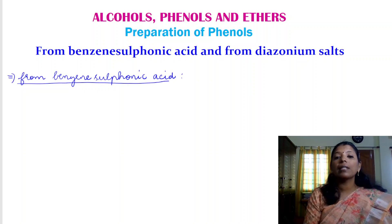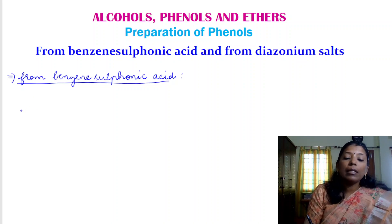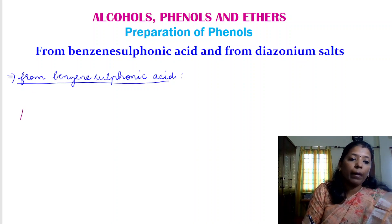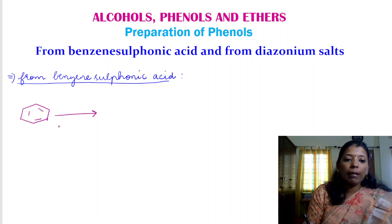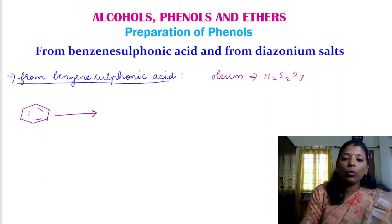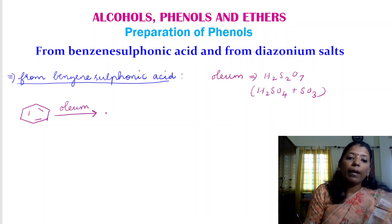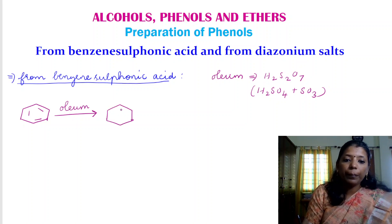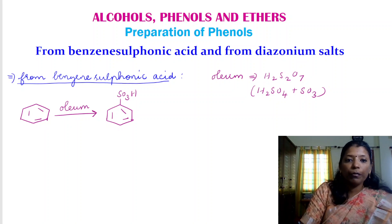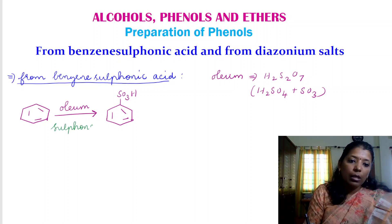To prepare phenol from benzene sulfonic acid, we first need to prepare benzene sulfonic acid. Benzene sulfonic acid is prepared by treating benzene with oleum. Oleum is H2S2O7, prepared by treating sulfuric acid with sulfur trioxide. When benzene is treated with oleum, we get benzene sulfonic acid — this process is called sulfonation of benzene.